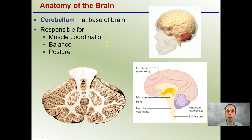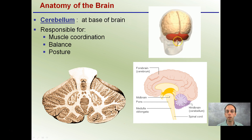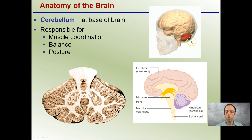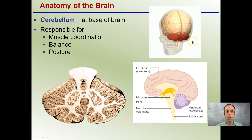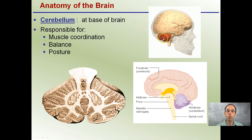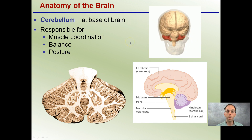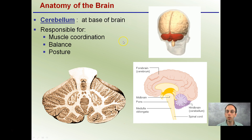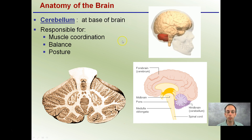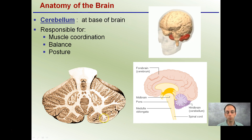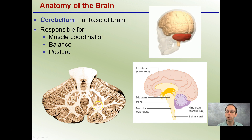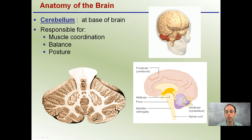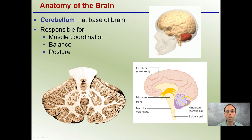We have the cerebellum, and this is at the base of the brain, located in red here. While it may be a little bit smaller in nature than the cerebrum we just talked about, it is responsible for muscle coordination, balance, and posture — all things that are very vital to our day-to-day lives. This is a cross-section of how it looks; you can see a lot of folds located in this region, and sometimes you may hear it referred to as the hindbrain, but we'll refer to it as the cerebellum.